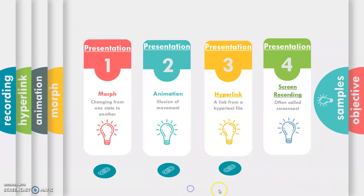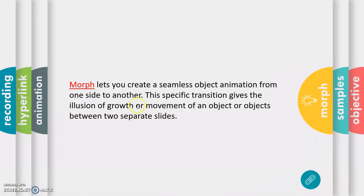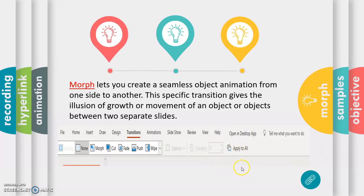So, Morph, yan, it lets you create a seamless object animation from one side to another. This specific transition gives the illusion of growth or movement of an object or objects between two separate slides. So, nakalagay siya sa mga separate slides, pero pag-present natin, meron siyang smooth transition. So, saan natin siya makikita? Doon sa ating PowerPoint. So, sa transition siya makikita. Take note, sa transition and katabi lang siya ng, yan, yung none. Nandyan si Morph.